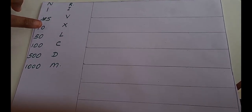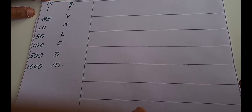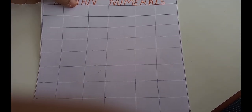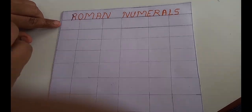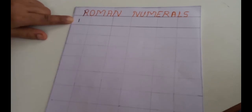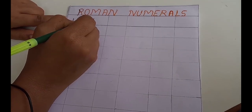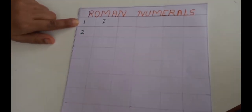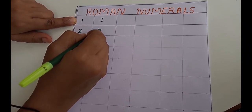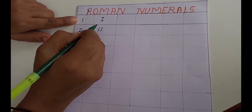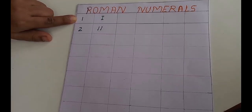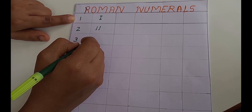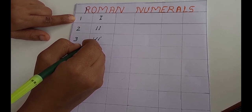You should memorize I, V, X, L, C, D, M in a flow — it will be easy for you kids. Now on this paper, we can discuss Roman numerals. Natural number 1 is written as I. Number 2 is written as two I's — II. Number 3 is written as three I's — III.